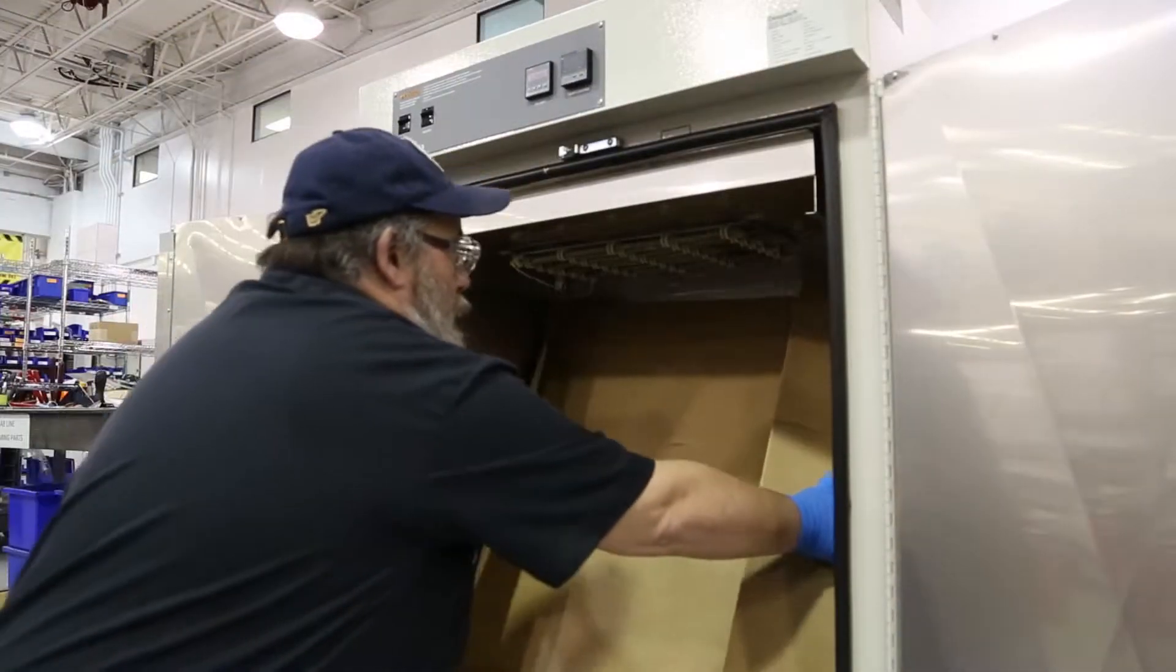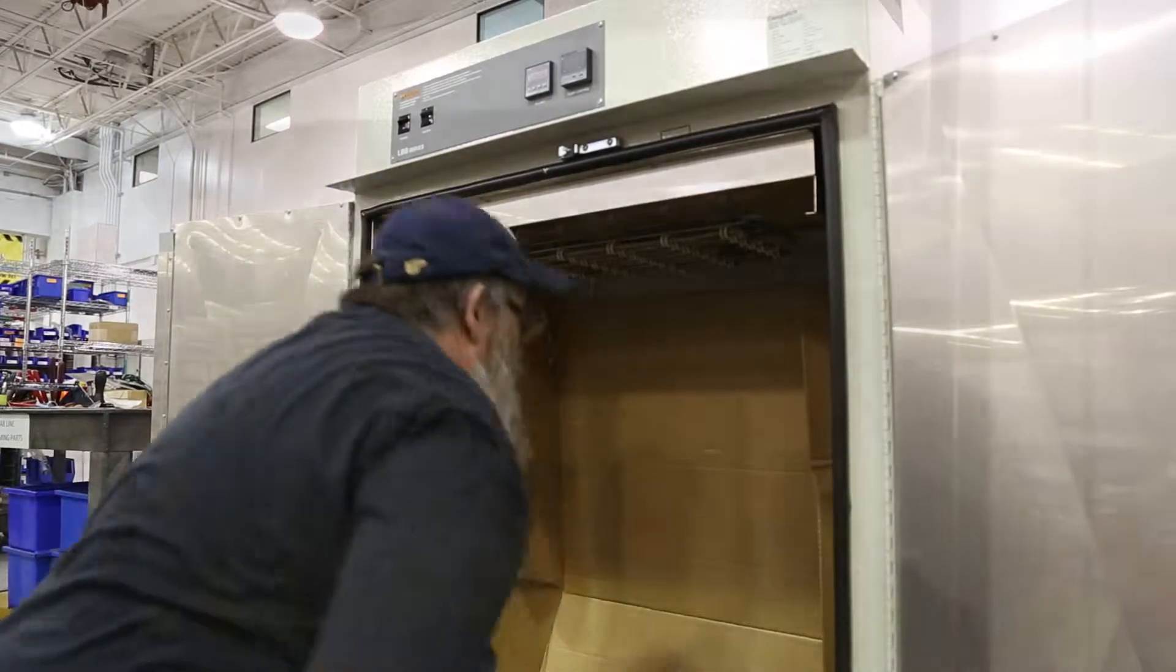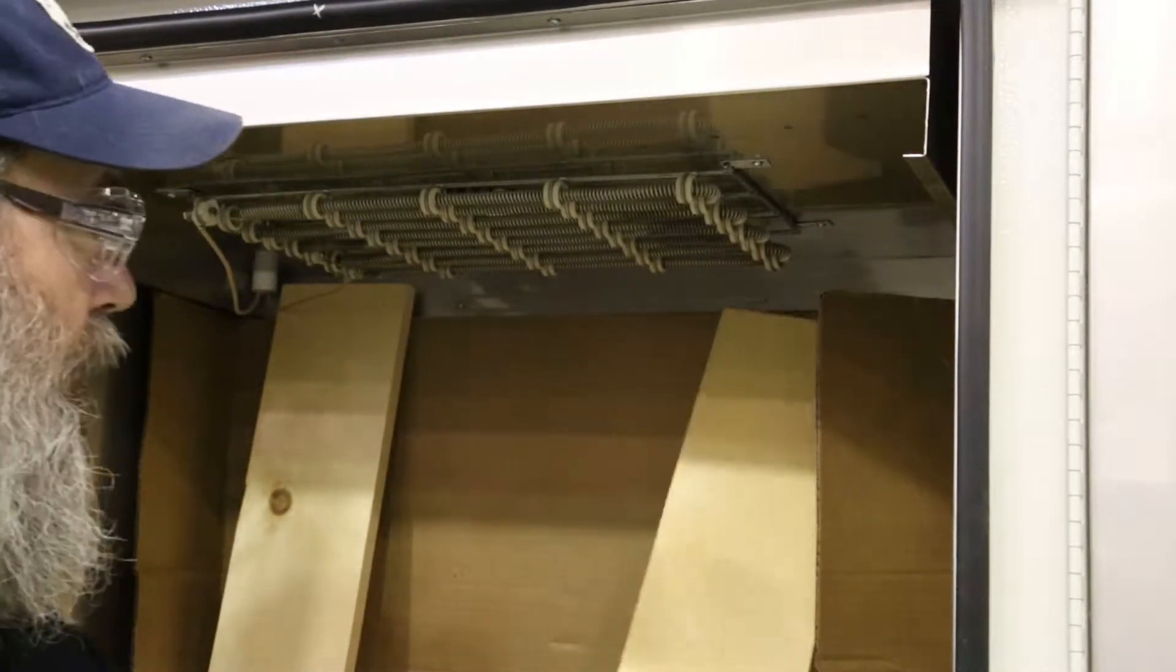Insert a sheet of cardboard to protect the interior of the oven. Insert two boards cut to the height of the chamber to support the back end of the ceiling.